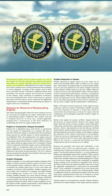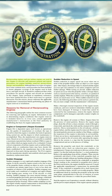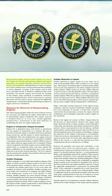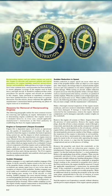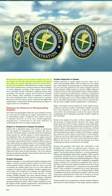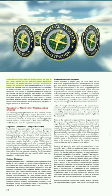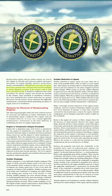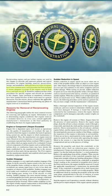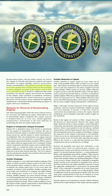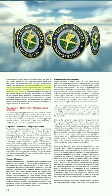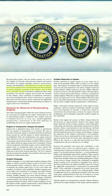Reciprocating engines and gas turbine engines are used in this chapter to describe general and typical procedures for engine buildup, removal, preservation, storage, and installation. Although these two types of engines have some common areas, each procedure has been included to ensure adequate coverage of the engines used in both heavy and light aircraft.